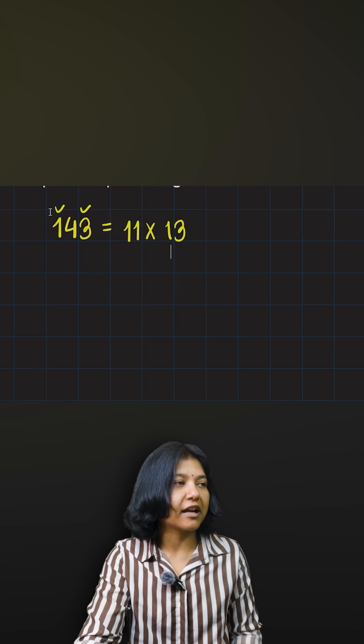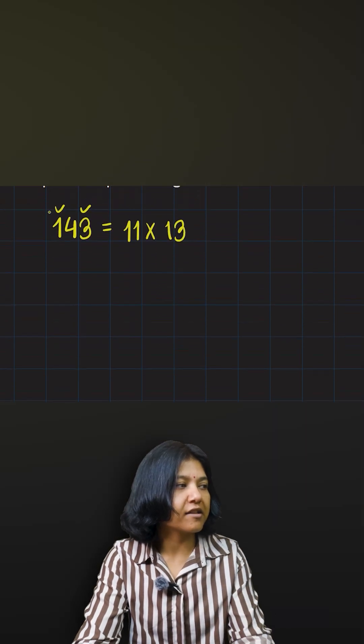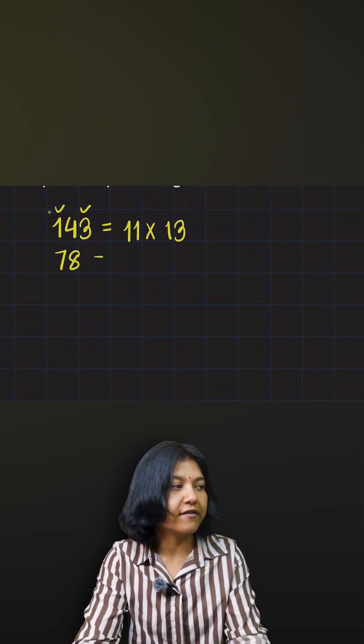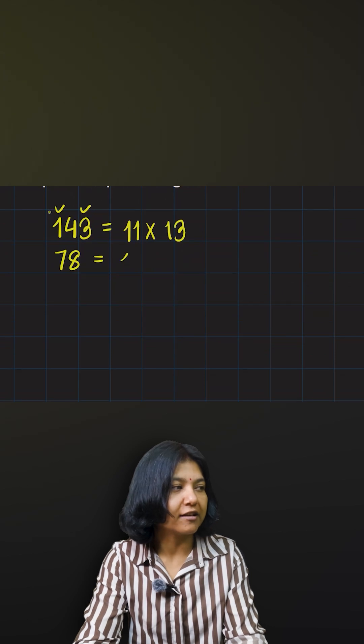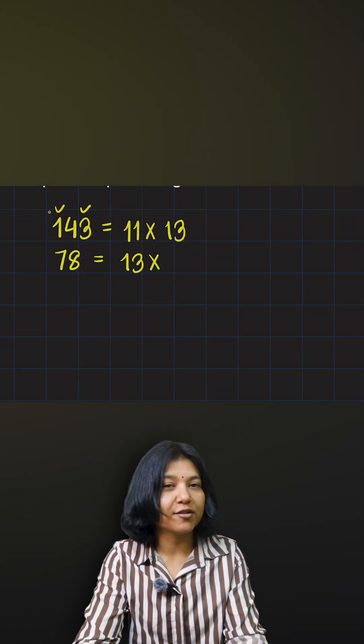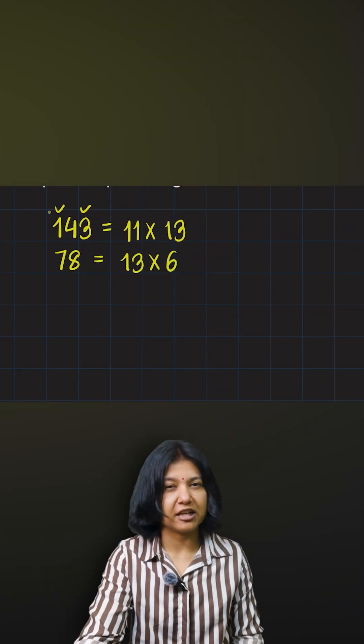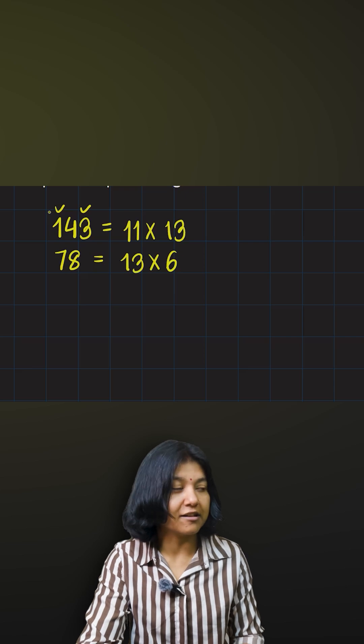If you look at the next number 78, I know 78 is not divisible by 11, so I'm going to try with 13. 13 times how much is 78? 13 times 6 is 78 because I know 3 into 6 is 18.